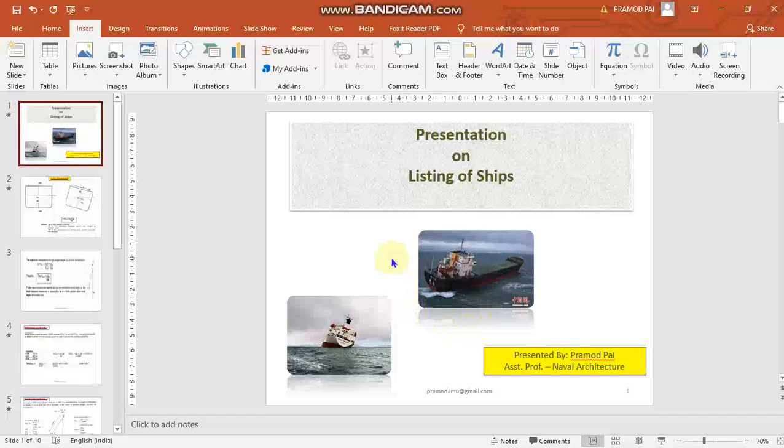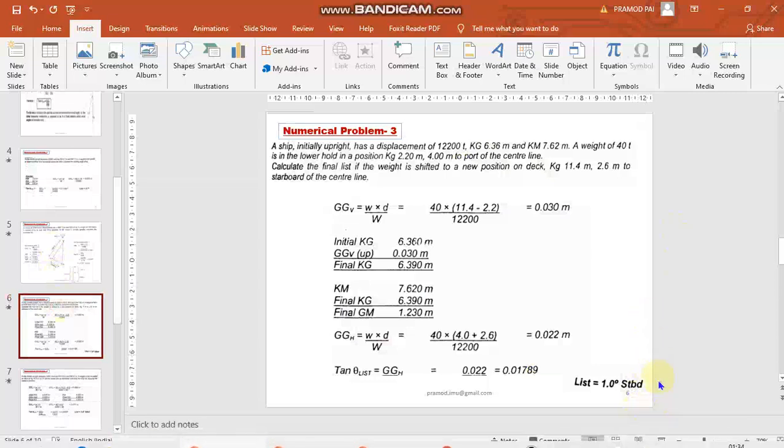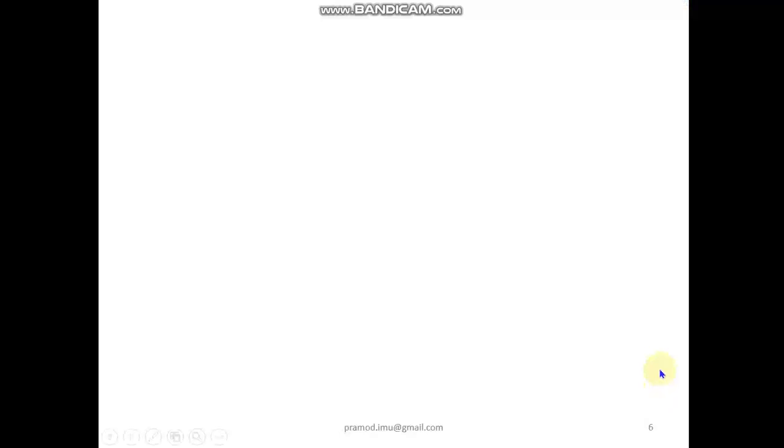So we have to know beforehand whether a list will develop due to some action being carried out on the ship, and if at all a ship has developed a list, we can prevent it. Let us see some more numericals which would help us in understanding the idea of how list is calculated.